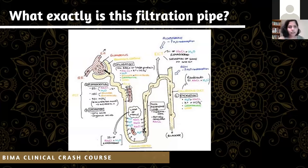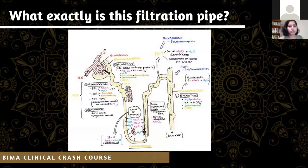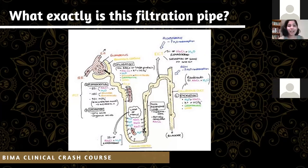As we journey through the proximal convoluted tubule, more than 65% gets reabsorbed. All glucose and amino acids will be reabsorbed — so we shouldn't see anything in urine. 65% of our NaCl and water, along with potassium, also gets reabsorbed through various pumps and channels, which I won't go through today.